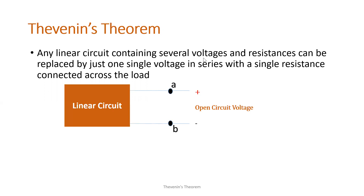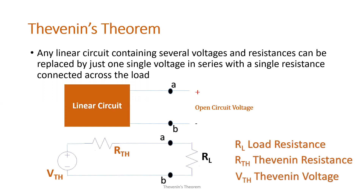We have the linear circuit with points A and B. The open circuit voltage we measure at points A and B is called the Thevenin voltage. The linear circuit can be represented by a single voltage source in series with the equivalent resistance, called the Thevenin resistance. At the other side of points A and B, we have the load resistance. So the open circuit voltage is our Thevenin voltage.